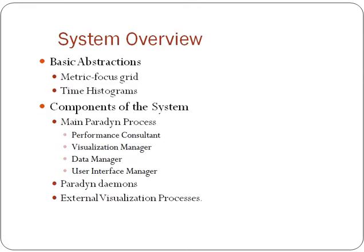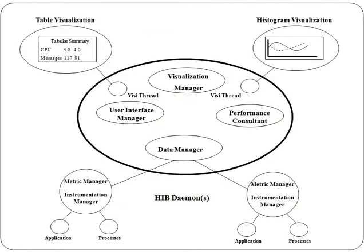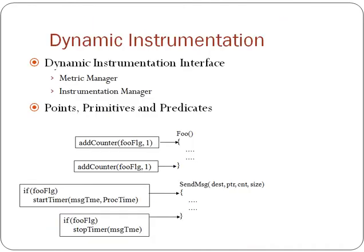System overview: basic abstractions, computations of the system and peripherals. These are the two tricks. Dynamic information, data and instrumentation, data and interfaces - points of primitive and predictive.